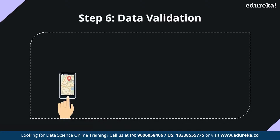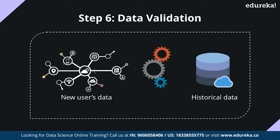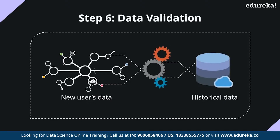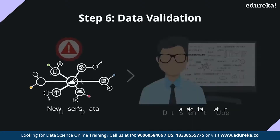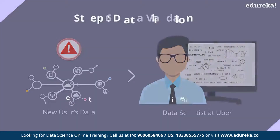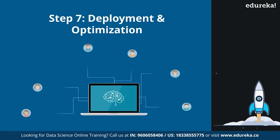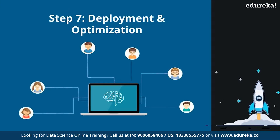Next is the data validation stage. Here the model is tested when a new customer booking arrives. The data of the new booking is compared with the historic data in order to check if there are any anomalies in the surge prices or any false predictions. If any such anomalies are detected, a notification is immediately sent to the data scientists at Uber who fix the issue. This is how Uber predicts the surge price for a given location and time. The final stage of data science is deployment and optimization. After testing the model and improving its efficiency, it is deployed to all users. Customer feedback is received and if there are any issues, they are fixed here.